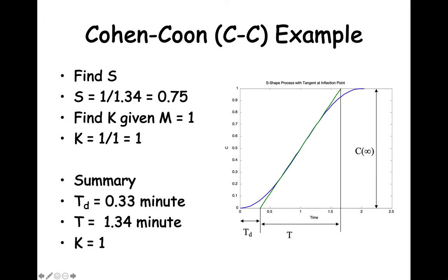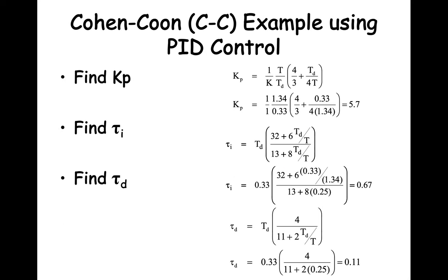We can calculate the tangent slope S, which is 1 over T. We get 1 over 1.34, so the slope is 0.75. We can calculate the process steady state gain K equal to C infinity divided by M. Both C infinity and M equal 1, so K equals 1. We know that the transport lag time Td equals 0.33 minutes, the process time constant T equals 1.34 minutes, and the process steady state gain K equals 1. Assuming PID control, we use these equations to find Kp, tau i, and tau d. We find that Kp equals 5.7, tau i equals 0.67, and tau d equals 0.11.